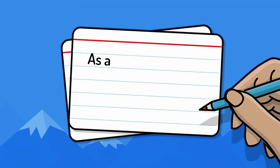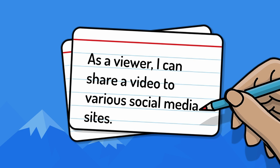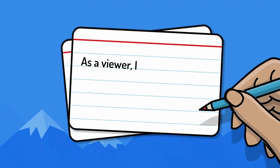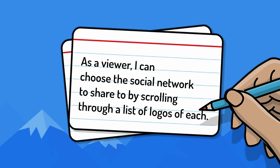A subsequent story could be 'as a viewer, I can share a video to various social media sites,' done with a very simple user interface — no fancy scrolling through logos, maybe just a drop-down list of text with the names of the social sites. The final story could then be 'as a viewer, I can choose the social network to share to by scrolling through a list showing the logos of each.' Splitting by interface works because the ultimately desired feature can be developed by starting with a simple interface that is successively improved.